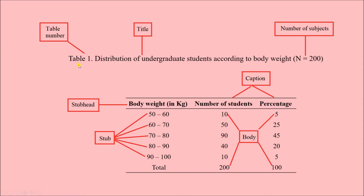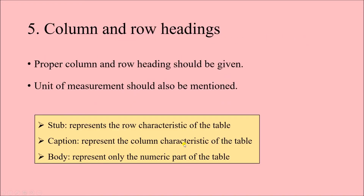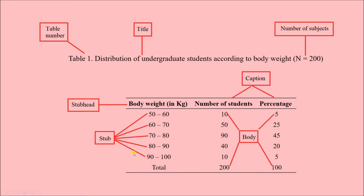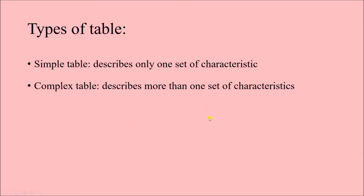Now let us look at the different parts of the table. This is the table number — Table 1 — followed by the title, and the number of subjects is mentioned at the end of the title. Caption represents the characteristic of the column, while stub represents the row characteristic. The stub head is basically the row heading, and the body represents the numerical portion of the table. So when constructing a table: give the table number, title, number of subjects, column and row headings, and follow a logical sequence.